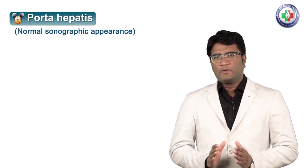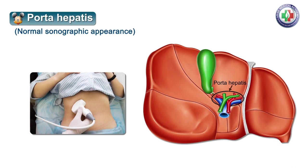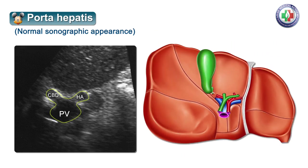Another important place where we encounter the Mickey Mouse sign is on ultrasound of the liver and biliary tree. At the inferior aspect of the liver at the porta hepatis, we see the portal triad where the portal vein and hepatic artery are entering the liver and the common bile duct is exiting. At this location on ultrasound, the portal vein forms the face of the Mickey Mouse, the common bile duct forms the right ear, and the hepatic artery forms the left ear. This appearance at the porta hepatis is called the Mickey Mouse sign.